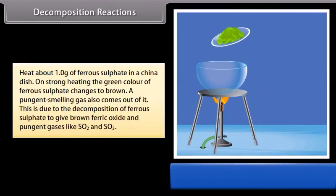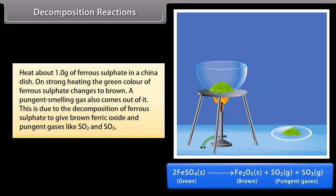Heat about 1.0 gram of ferrous sulfate in a china dish. On strong heating, the green color of ferrous sulfate changes to brown. A pungent smelling gas also comes out of it. This is due to the decomposition of ferrous sulfate to give brown ferric oxide and pungent gases like SO2 and SO3.